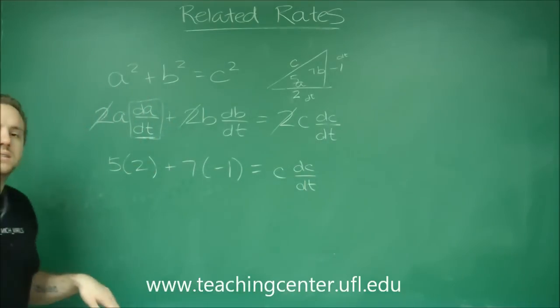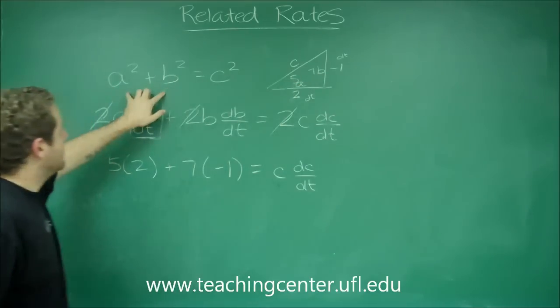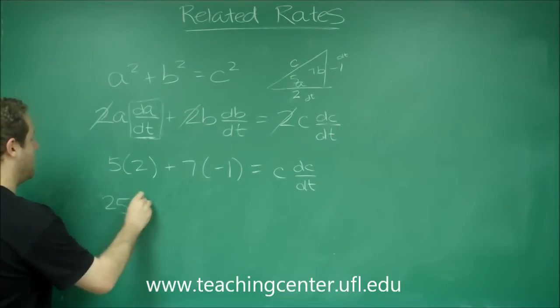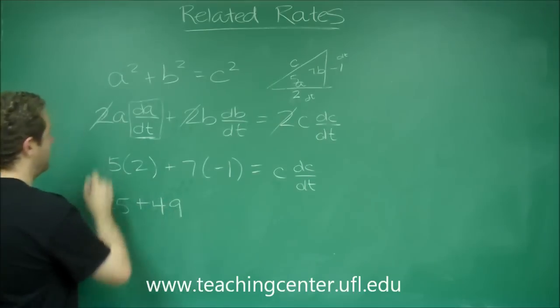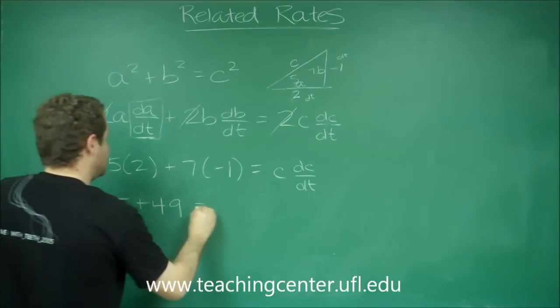And if we're looking for DC DT that means we need to know C, but if we know what A and B are we can find C just by using our first equation again. 25 plus 49, 5 squared for A, 7 squared for B, equals C squared.